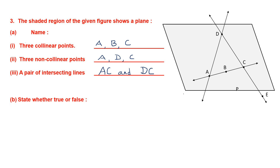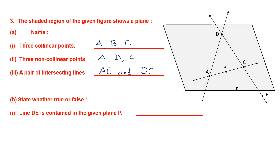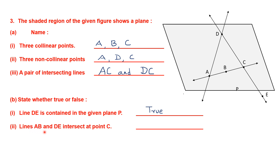Next one. State whether true or false. Line DE is contained in the given plane — D is inside that plane, so this statement is true. The plane is the shaded figure shown, and line DE is contained in the plane. Next: lines AB and DE intersect at point C — that statement is also true.